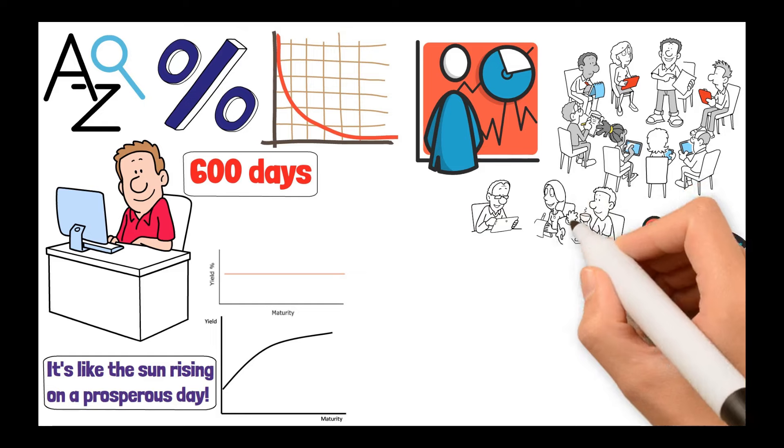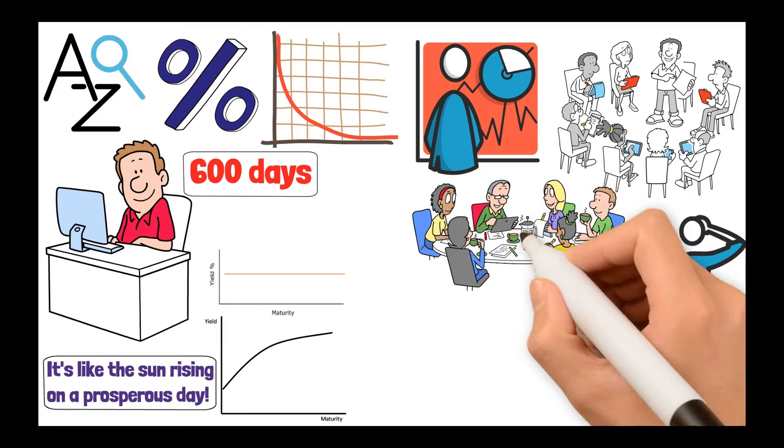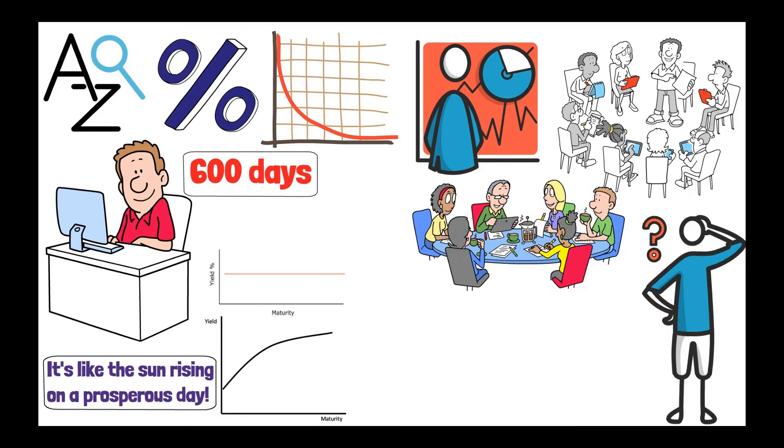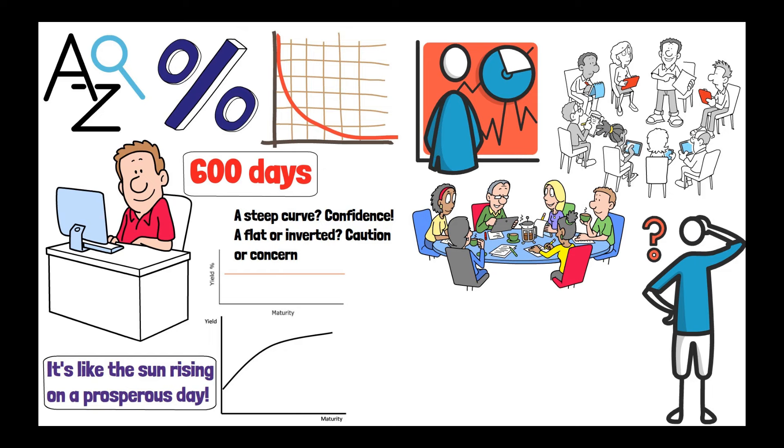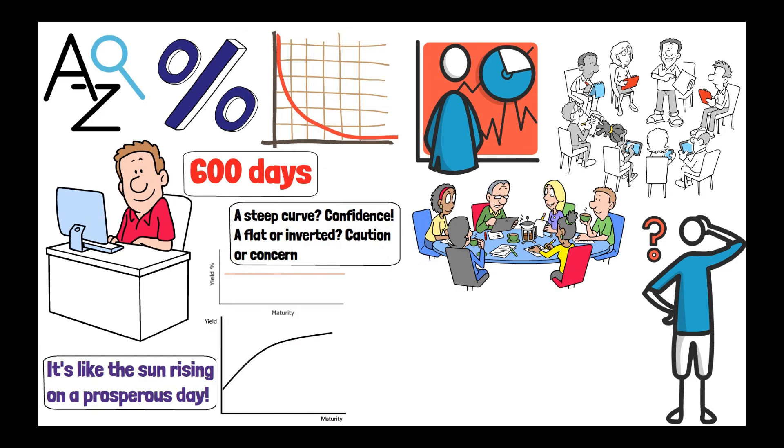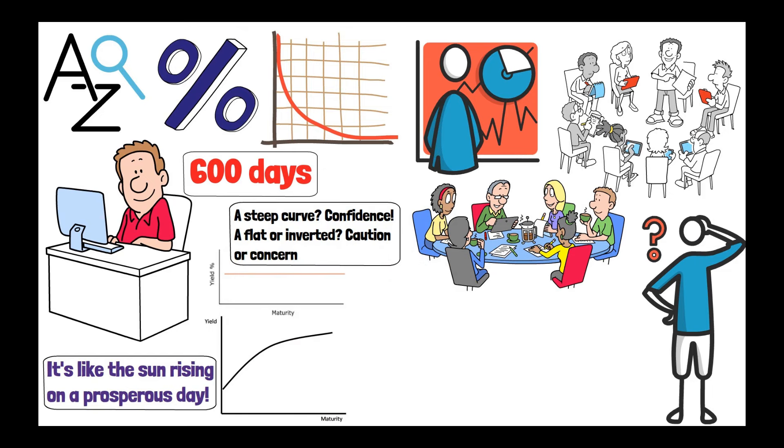By comparing the yields of different maturities, investors can gauge the market's pulse. A steep curve? Confidence. A flat or inverted? Caution or concern. And right now, we may have a reason to be concerned.